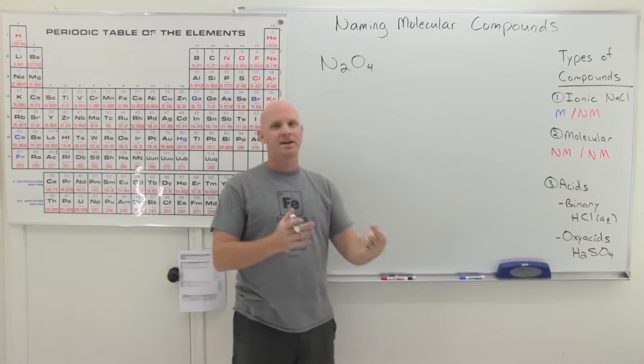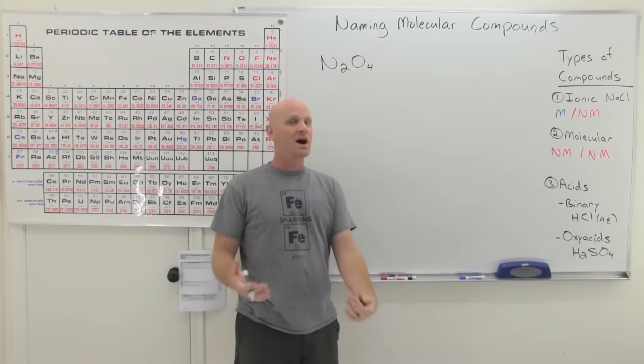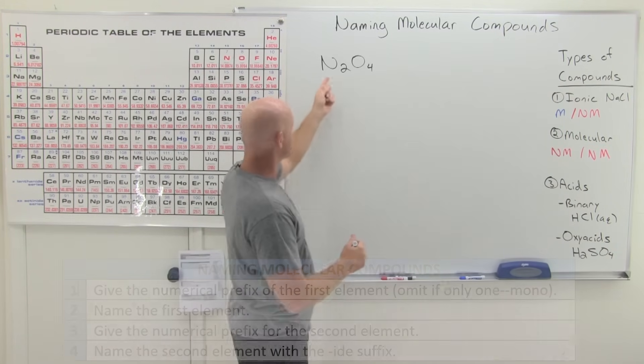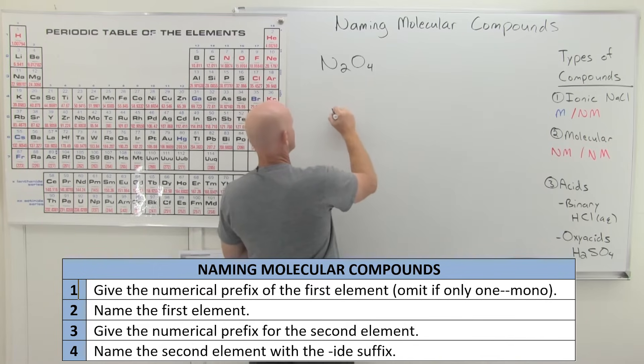So we can't really say cation and anion anymore. These are not ionic compounds. We don't have ions. But we'll name the first element first and the second element second.